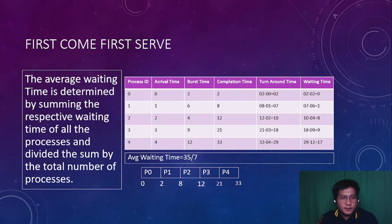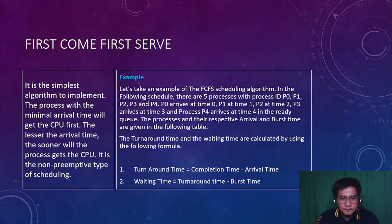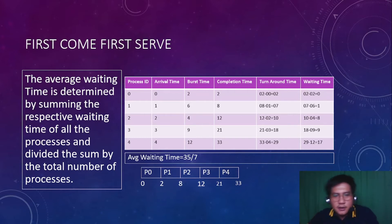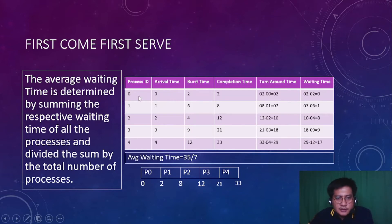In this table we have the process ID, arrival time, burst time, completion time, turnaround time, and waiting time. The given values are only the process ID, arrival time, and burst time. To find the completion time, we refer to the burst time and arrival time of each process. Since process ID 0 arrived at time 0 and has a burst time of 2, its completion time is 2. For process ID 1, which arrived second after process 0, it has a burst time of 6 seconds.